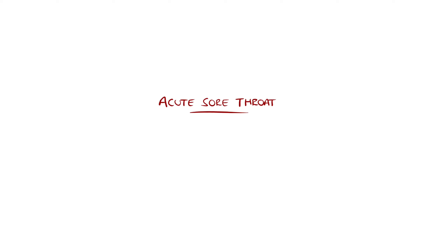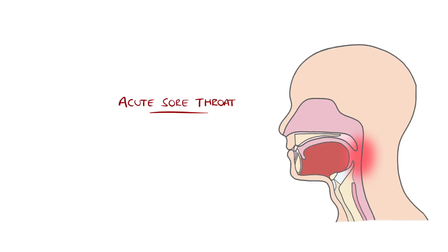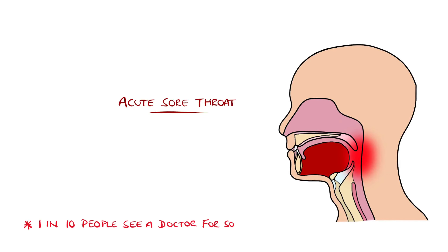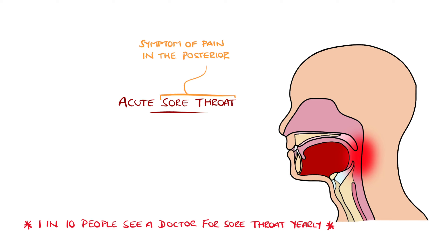An acute sore throat is one of the most common presenting complaints, with up to 10% of people contacting their doctor each year with one. It is the term used to describe the symptom of pain in the posterior pharynx, that is the back of the mouth. Often as a result, people find it difficult to eat and drink.